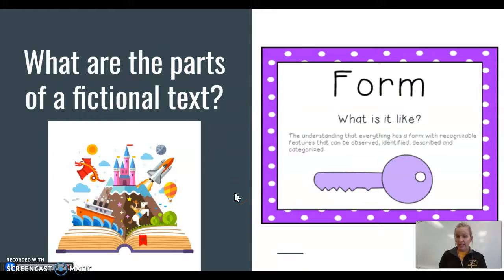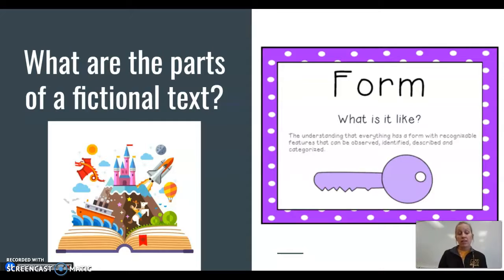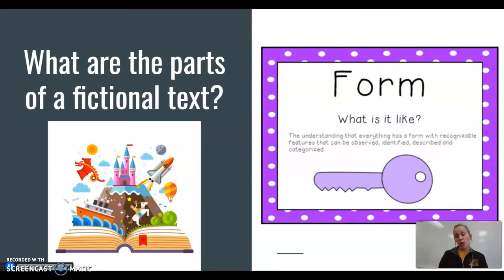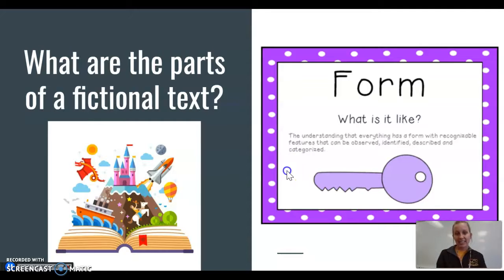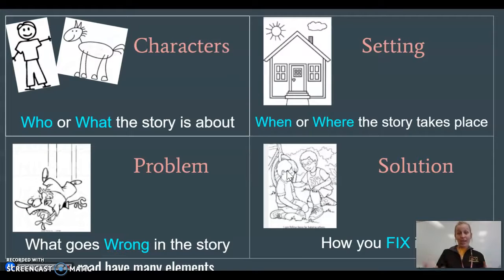There are parts of a story that authors use to communicate their ideas clearly so that we understand what they're trying to share with us. There are parts of a fictional text called story elements. You'll see right here on my screen the word 'form.' In my class we say: form, form, what is it like? We're going to find out what these stories are like and what story elements, or story parts, authors always use to share and communicate their ideas.